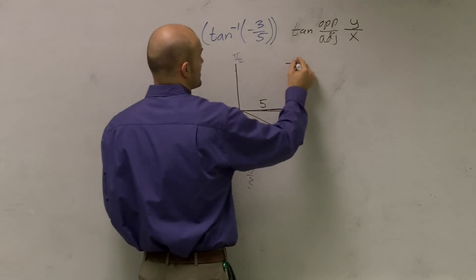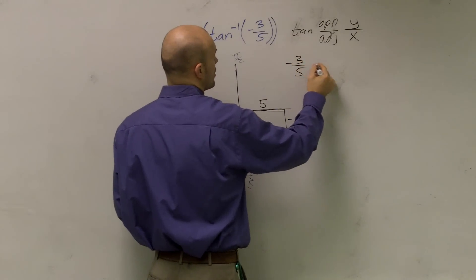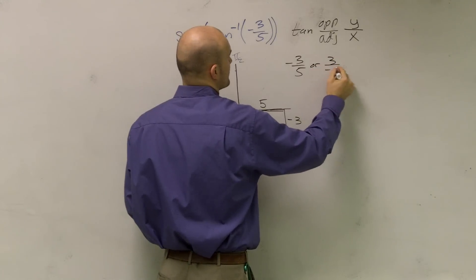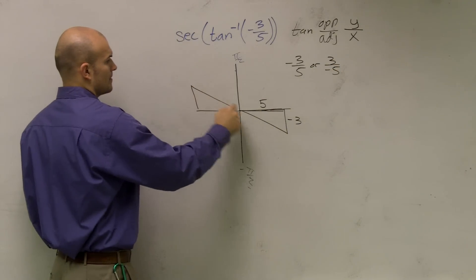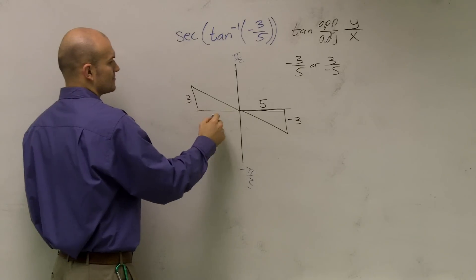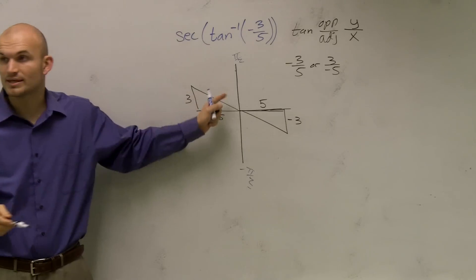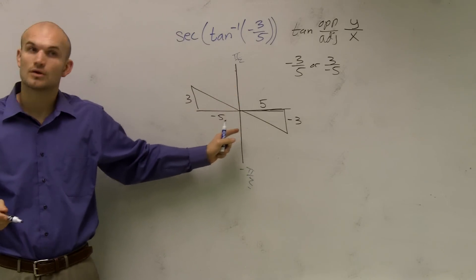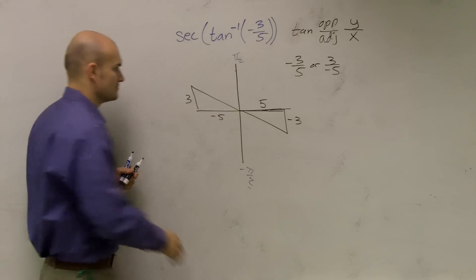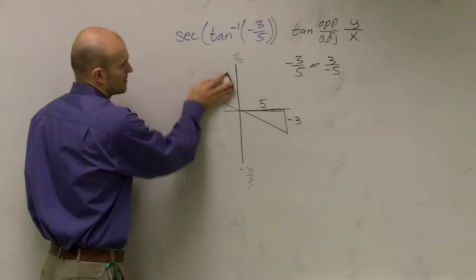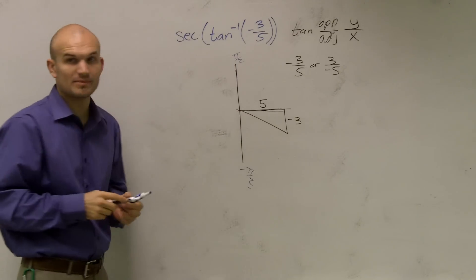Or I could say, so I could have a negative three over five, or I could have a three over negative five. But if I did a three over negative five, that looks something like this. And is that within our range of our inverse function? No. So we can't draw the graph three and negative five. So here's our triangle that we're going to be dealing with.